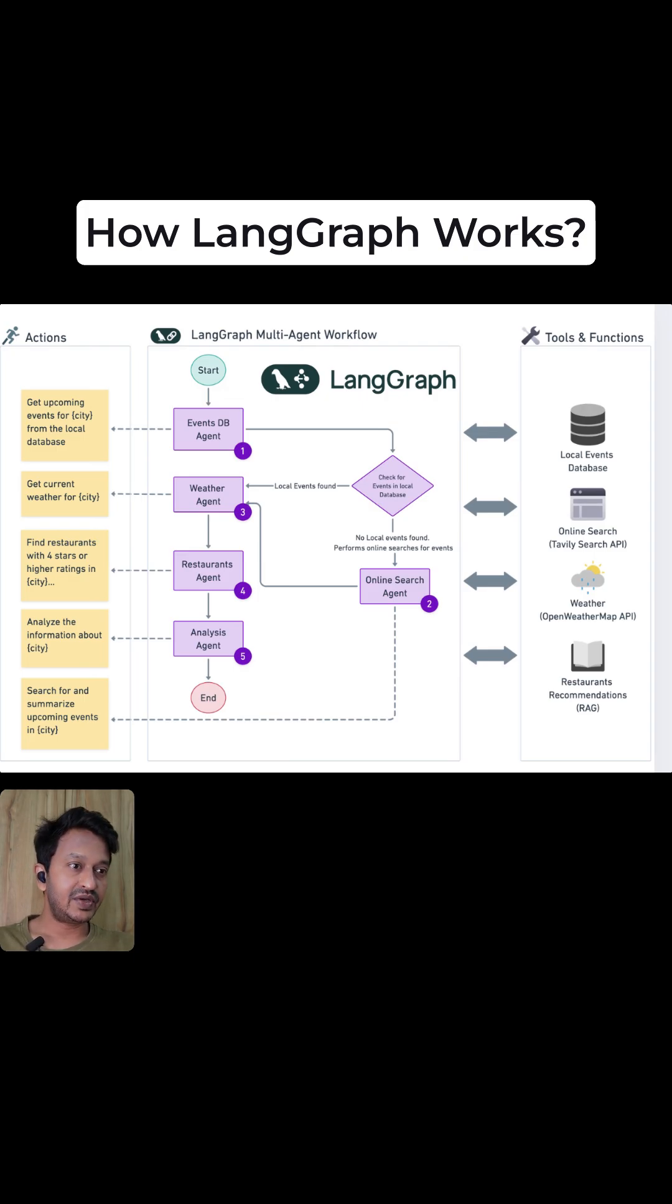And as you can see in the image, there are different agents: events DB agent, weather agent, restaurants agent, analysis agent, and online search agent. The coordination of all these agents can be easily handled using LangGraph.